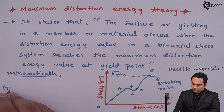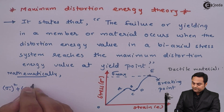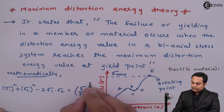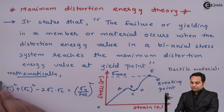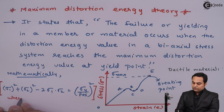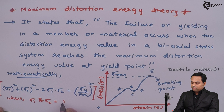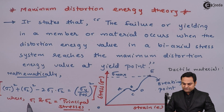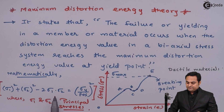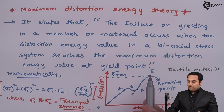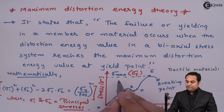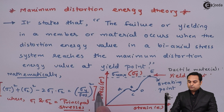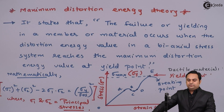Mathematically, we can write the relation as: Sigma one squared plus Sigma two squared minus two times Sigma one times Sigma two equals Sigma Y upon FOS, whole squared. This is the relation from Maximum Distortion Energy Theory, where Sigma one and Sigma two are the principal stresses, Sigma Y is the maximum stress value at the yield point, and FOS is the factor of safety.